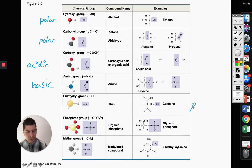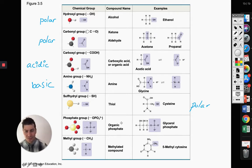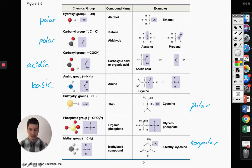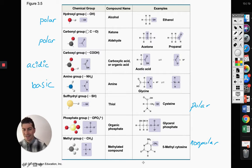Sulfhydryl also is going to make it polar. The phosphate group — we're not going to worry about that one now. And then lastly, the methyl group, because it's just a carbon and three hydrogens, is going to make it non-polar. It's a hydrocarbon, so you don't see anything other than carbons and hydrogens — that is obviously going to be non-polar. So there are your functional groups. I need you to be able to identify them, because it'll make things a lot easier when we go over the structure of our macromolecules.